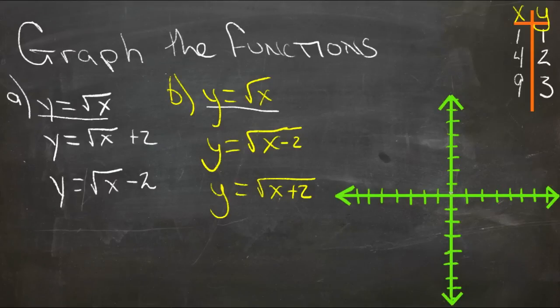square root of 9 is 3. So we should have points at 1, 1, 4, 2, and 9, 3. So right about here.